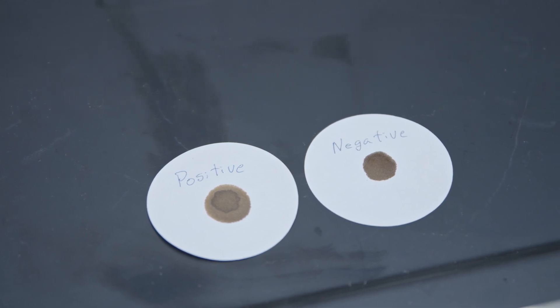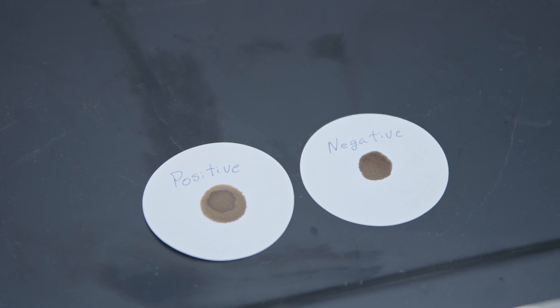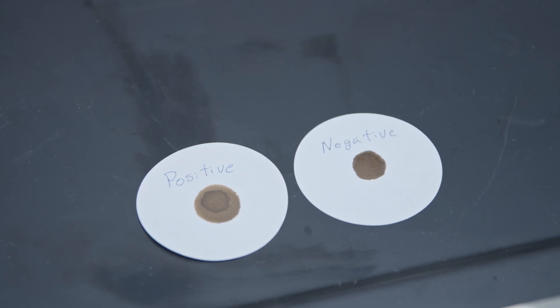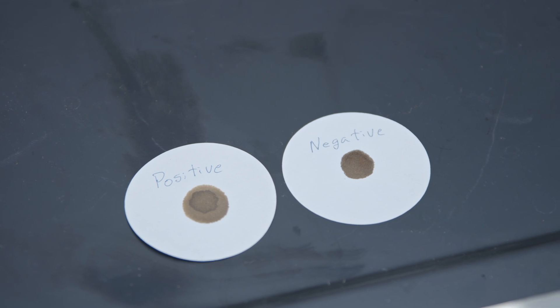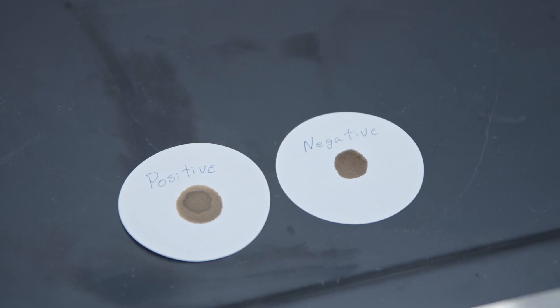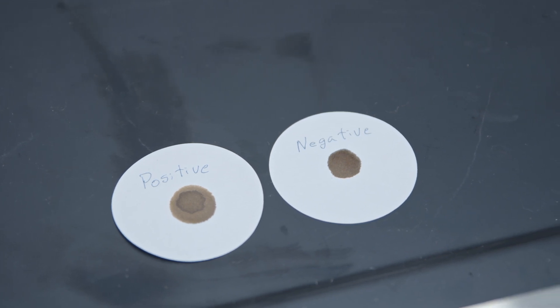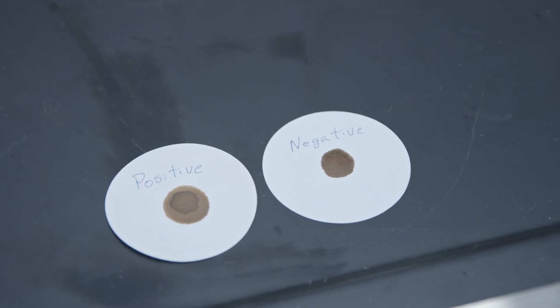If the drop forms a uniformly circular dark stain, report the test as negative. If the drop now forms a darker solid or annular nucleus with a brown or yellowish brown circular stain, it should be reported as positive.